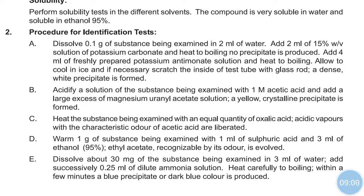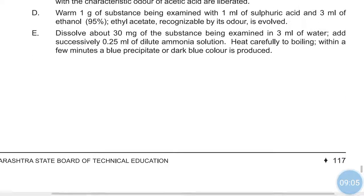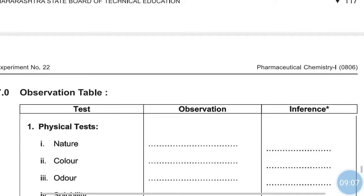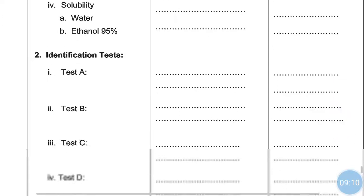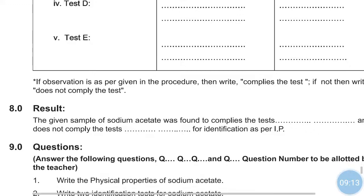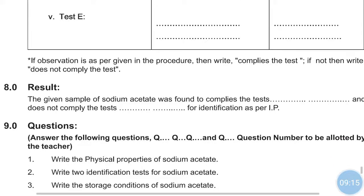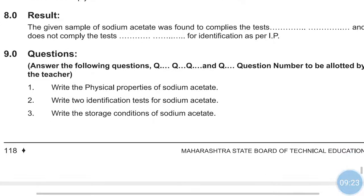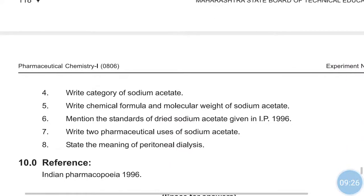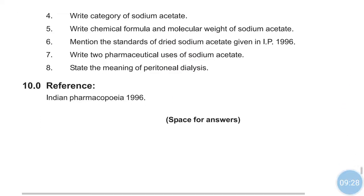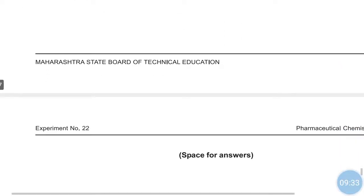This is the A test for the identification of sodium acetate. You can read the remaining tests and come to know about them. The observations and inferences are there — if the test complies, write 'complies the test'; if any test is not complying, write 'does not comply the test.' This compound was also studied in the theory lecture, so we are not going into further detail.